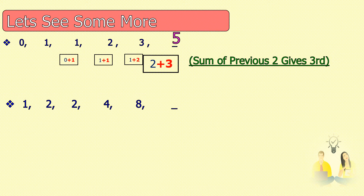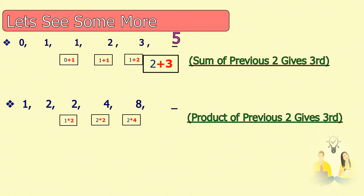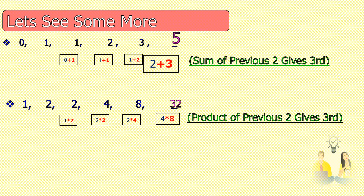Similarly, in this series, it's the multiplication of the two previous terms to get the next term. So 1×2=2, 2×2=4, 2×4=8, and 4×8=32.